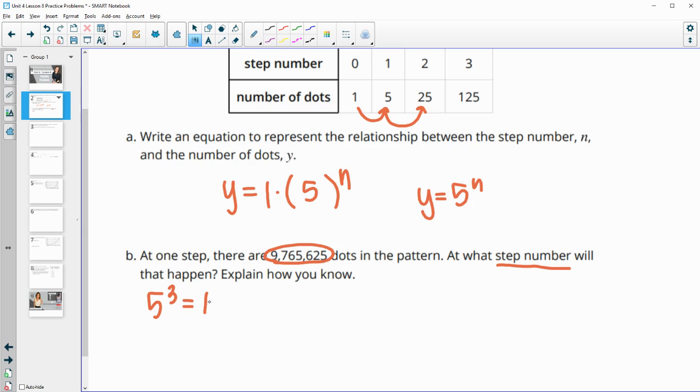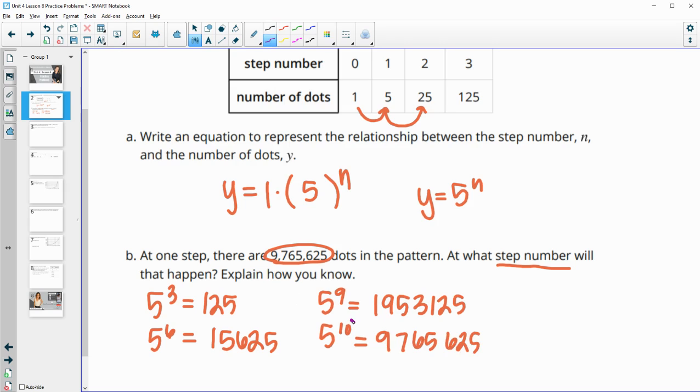So five to the third, we know in the table was 125. So then I tried five to the sixth and got 15,625. So I went up to five to the ninth and got 1,953,125, which was getting closer. So then I tried five to the 10th and got 9,765,625. So I found it. And so that means that at step 10 is when that number happens.